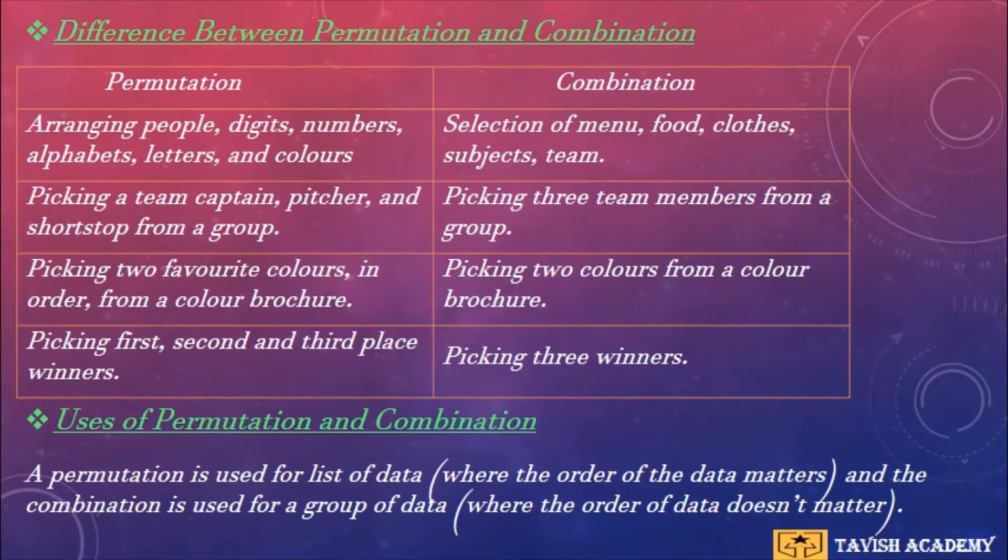Uses of permutation and combination. So generally, permutation is used for a list of data where the order of the data matters, and the combination is used for such a group of data where the order of data doesn't matter.